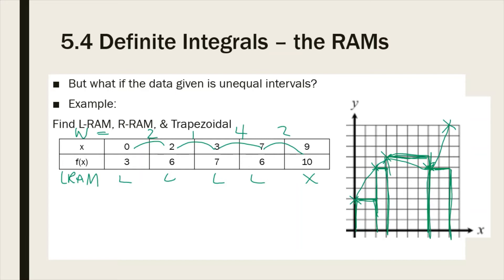And all we have to do is figure out the area of each rectangle. So the first one, you can see that I'm going to do 3 times 2. So the area is going to be 3 times 2 plus 6 times 1 plus 7 times 4 plus 6 times 2.